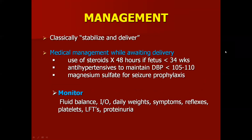The management goal is to stabilize and deliver. Required investigations include hematocrit, hemogram, platelet count, coagulation assay, serum electrolytes, renal function tests, serum creatinine, serum uric acid, LFT, urine examination (routine and microscopic), and blood grouping and cross-matching. If the fetus is less than 34 weeks and the patient is stable, steroids are used for 48 hours for lung maturity. Diastolic blood pressure is maintained between 105 to 110 mmHg, and seizure prophylaxis is initiated with magnesium sulfate. Strict fluid balance monitoring, daily weights, monitoring for severe preeclampsia symptoms, reflexes, platelet count, liver function, and proteinuria are essential.